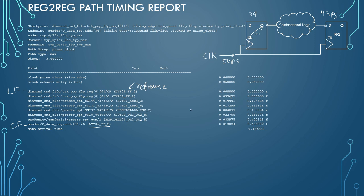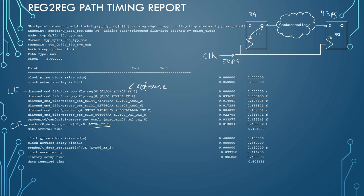The data arrival time starts from the clock source and ends at the D pin of the capture flip-flop. Now we look at the required time section, which also starts at the clock source but travels along the capture clock path rather than the data path. The clock period is 400 PS, so the capture edge arrives one full cycle later.